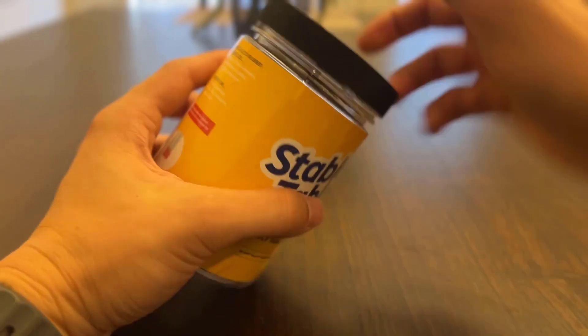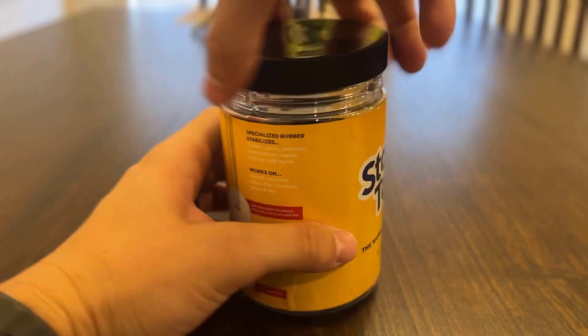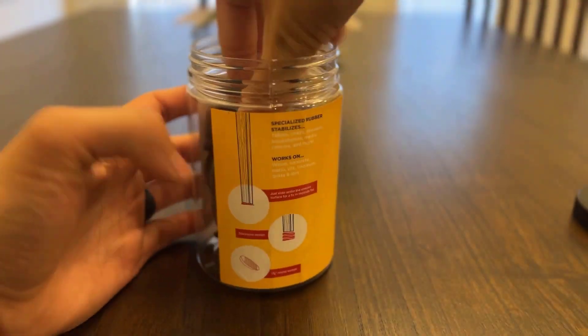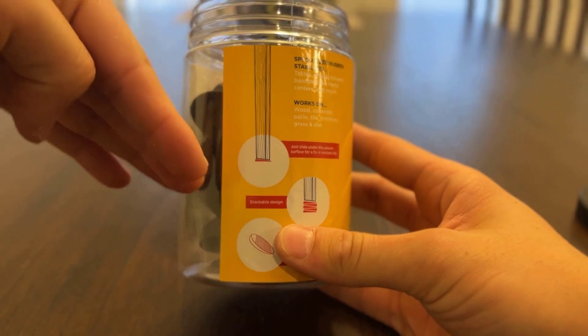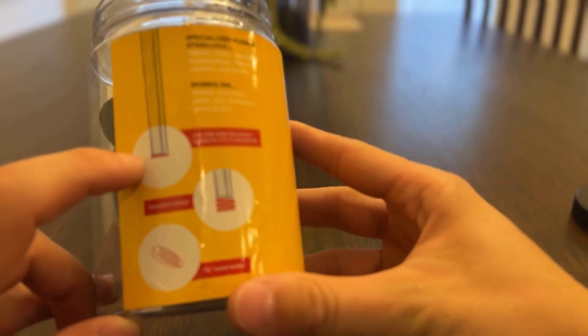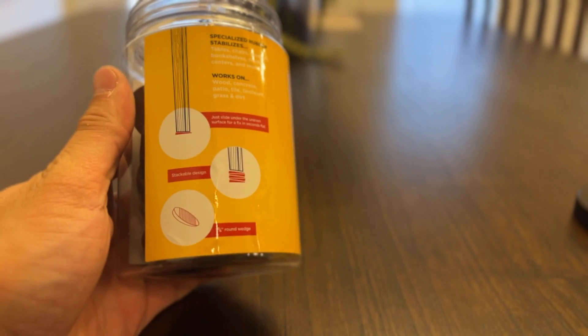These particular products, let me get you one out here. So these are for tables, you know, that have the legs that kind of poke at an angle. You can use these to level it off where it's flat.